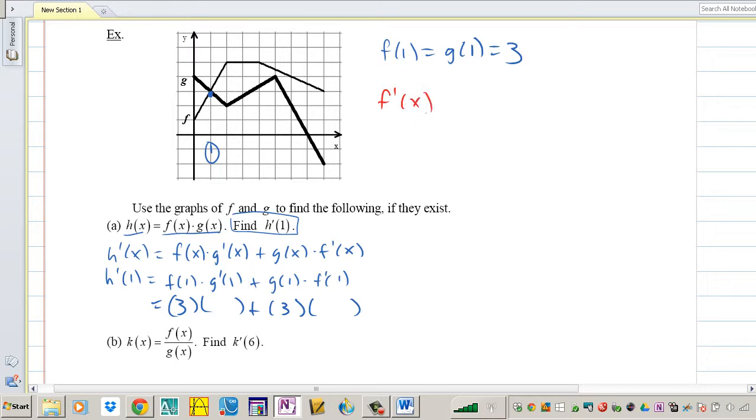F prime of 1, G prime of 1. This is G prime of 1 right here and that is a slope of negative 1. F prime of 1 is a slope of 2. So it's going to be negative 1 times 3 plus 2 times 3, which is negative 3 plus 6 equals 3.